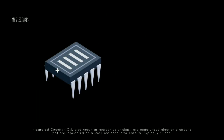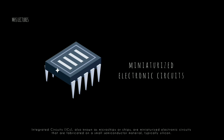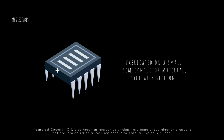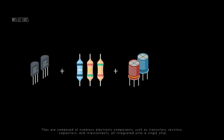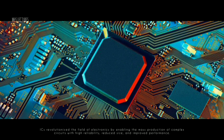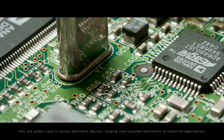Integrated circuits (ICs), also known as microchips or chips, are miniaturized electronic circuits fabricated on a small semiconductor material, typically silicon. They are composed of numerous electronic components such as transistors, resistors, capacitors, and interconnects, all integrated onto a single chip. ICs revolutionized the field of electronics by enabling the mass production of complex circuits with high reliability, reduced size, and improved performance. They are widely used in various electronic devices, ranging from consumer electronics to industrial applications.